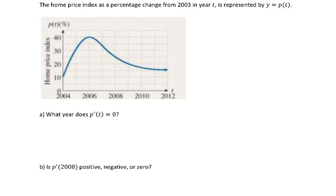Hi everyone, let's take a look at another problem here. The home price index as a percentage change from 2003 in year t is represented by y equals p of t. So we can see this graph here, the x-axis represents time and the y-axis represents the home price index.